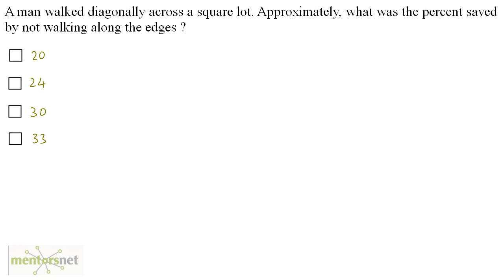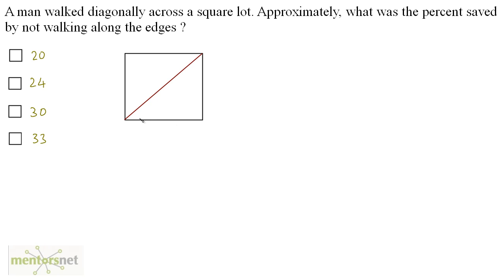A man walked diagonally across a square lot. Approximately, what was the percentage saved by not walking along the edges? This is the diagrammatic representation of our question. We have a square lot and a man starts from one corner and goes diagonally across. If this man had to travel along the edges, he would have traveled along two sides.